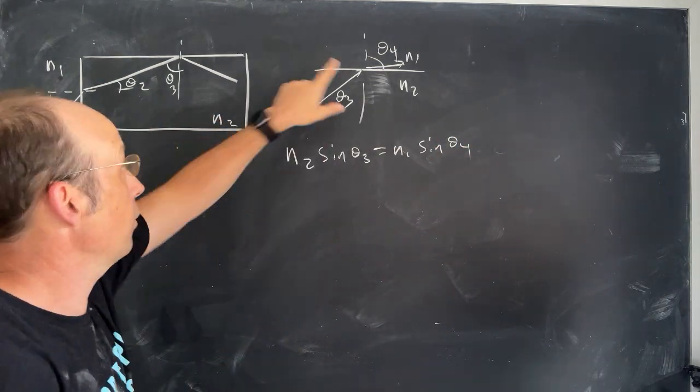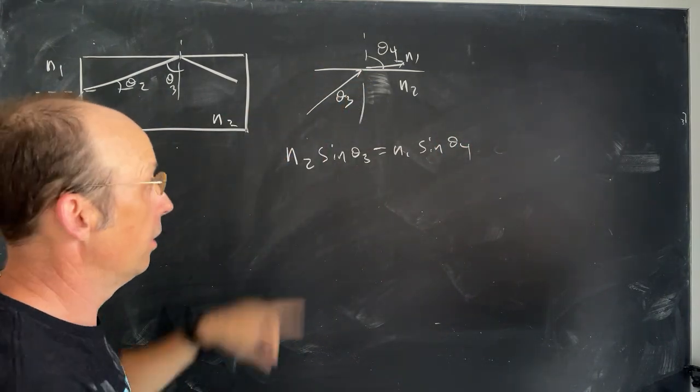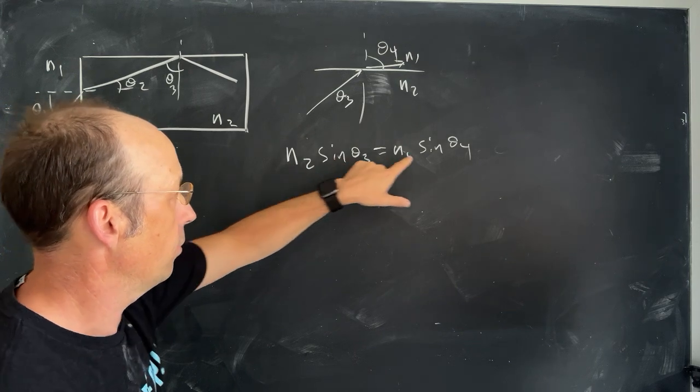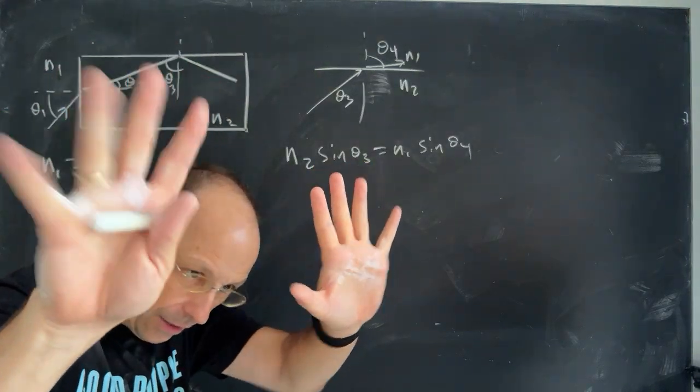And so that looks weird because I'm trying to use the angles that I use that match up here. Normally you do N2, theta 2, N1, theta 1, but you get it, right? You get it.